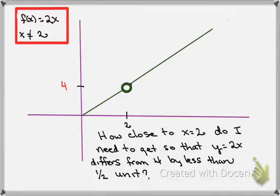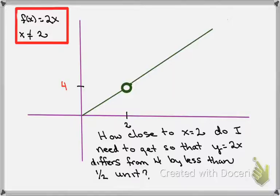The question I might ask myself is: how close to x equals 2 do I need to get so that y equals 2x differs from 4 by less than, say, a half a unit? Really, we're asking: is there a bound around x equals 2 on the x-axis such that if I get within that bound, I can assure myself that I'm within some bound around the limit, which is 4? There is a relationship between getting close to the limit point on the x-axis and how close I get to the actual limit on the y-axis.